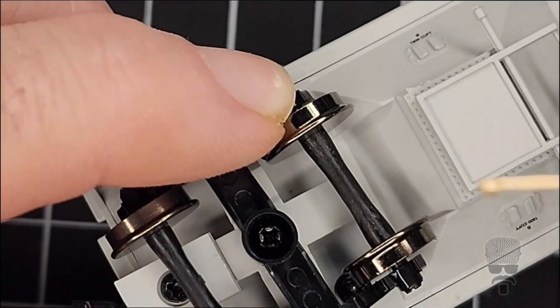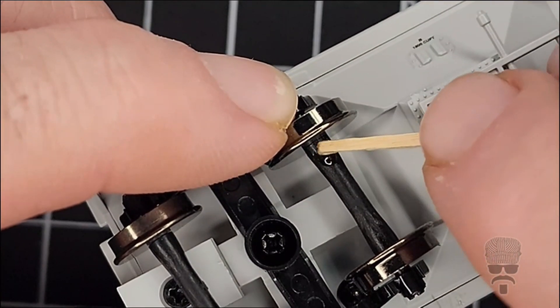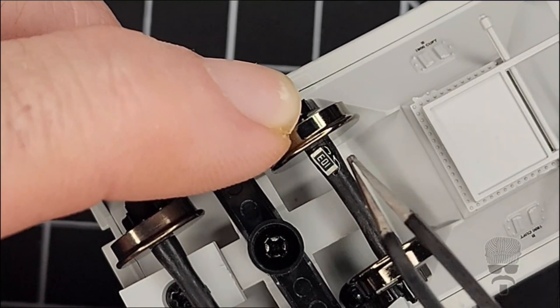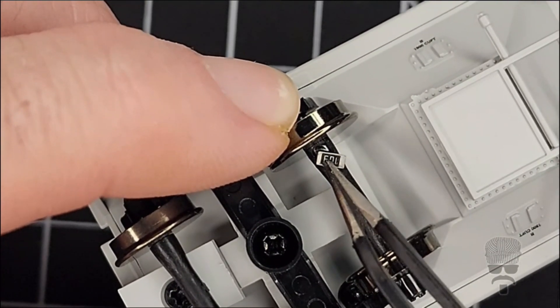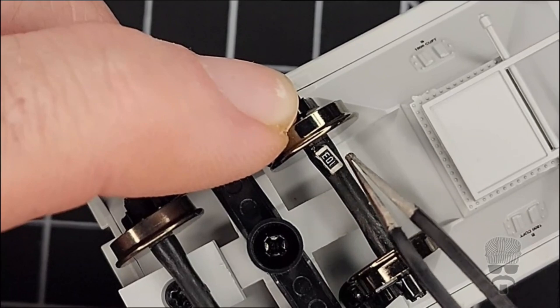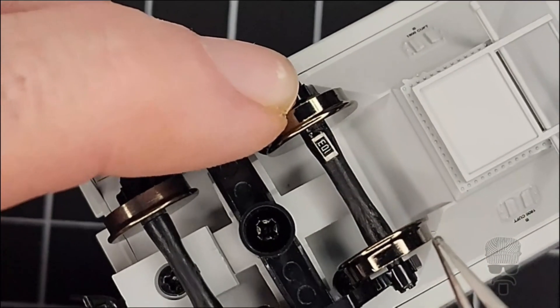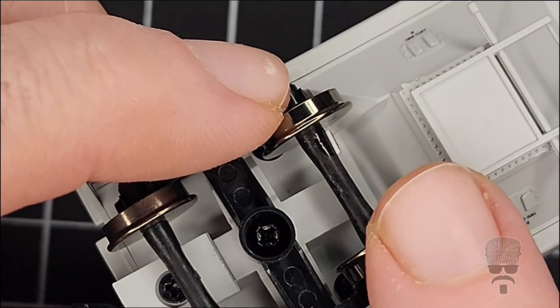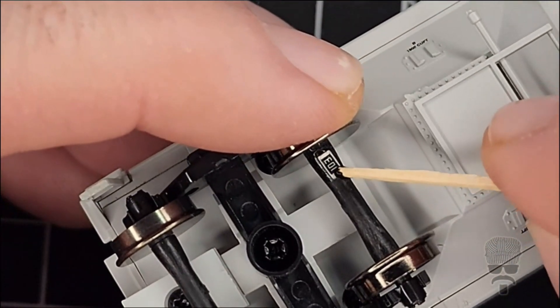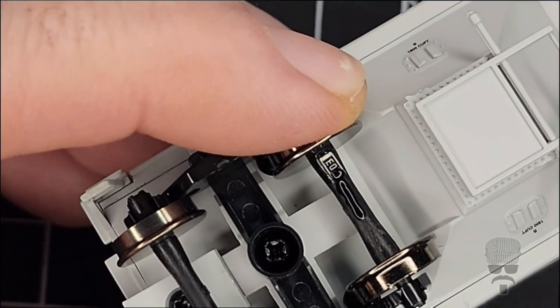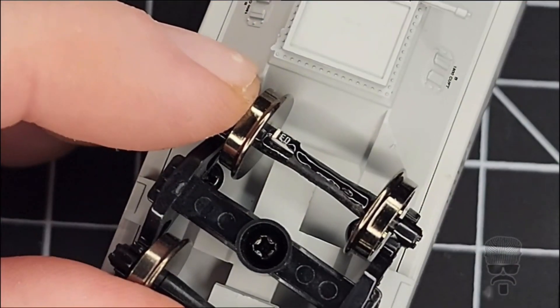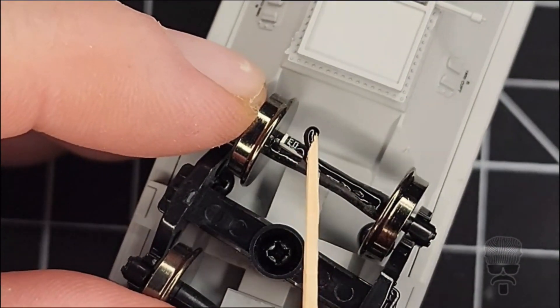And last but not least, we have our wheelset that has metal wheels, but a plastic axle. So we're going to mount our resistor and we're going to have to run the paint the entire length of the axle to reach both wheels.